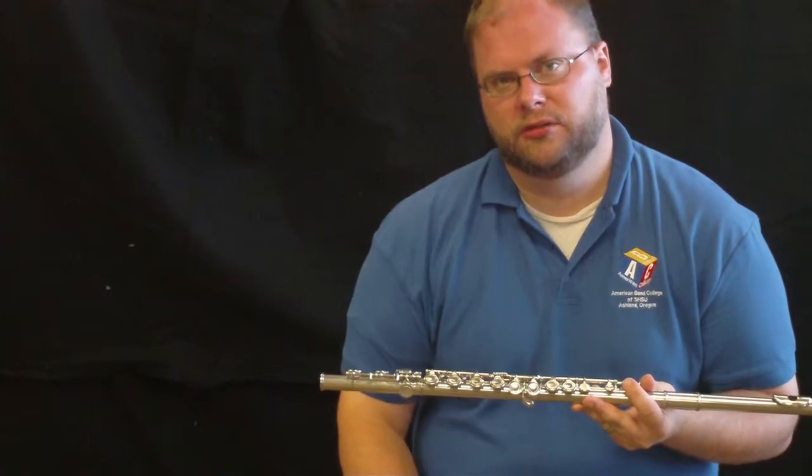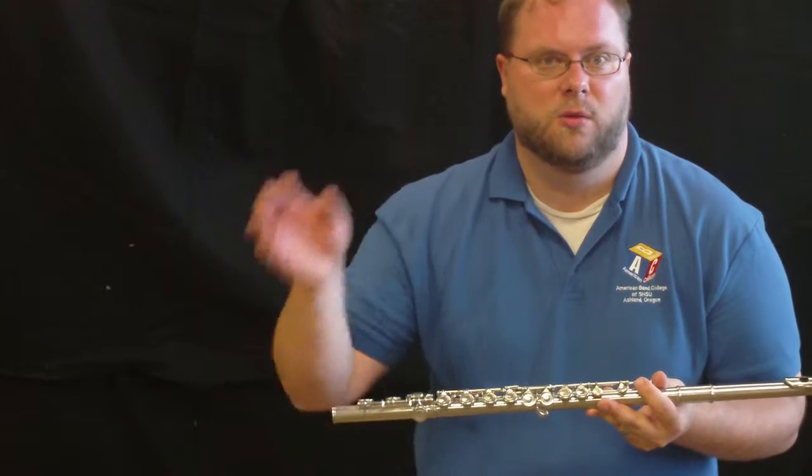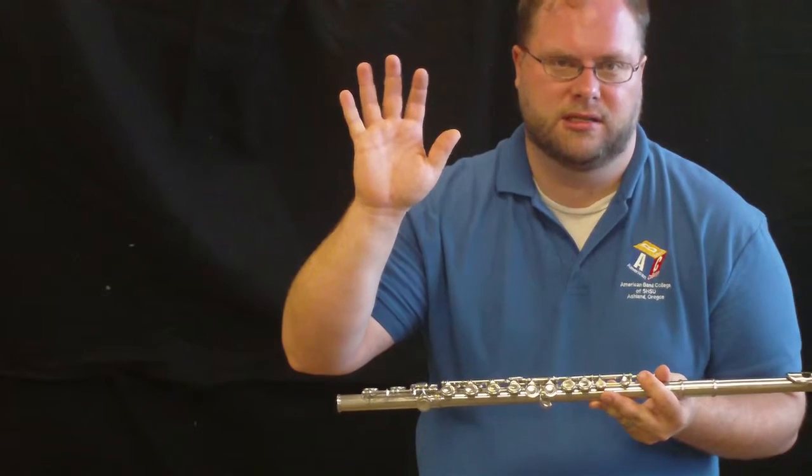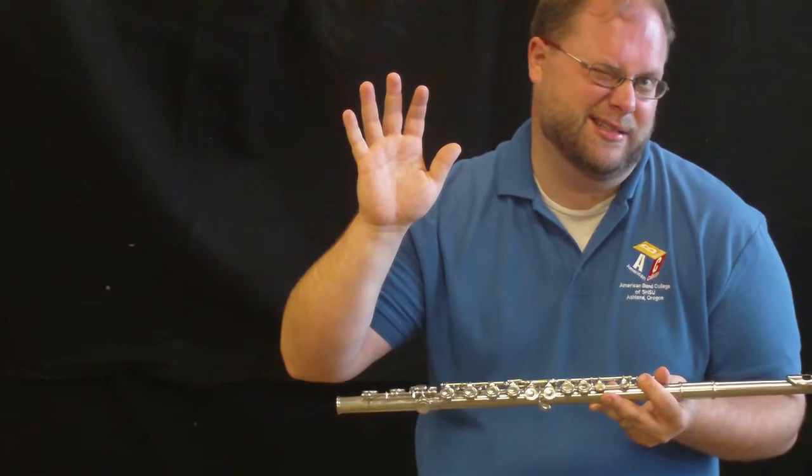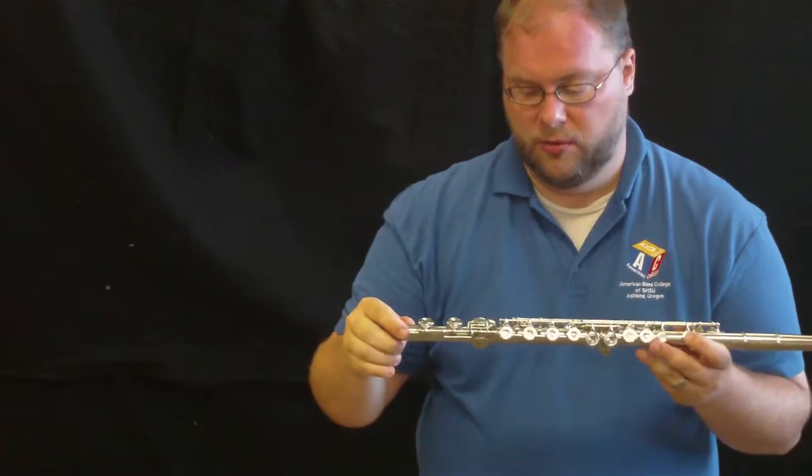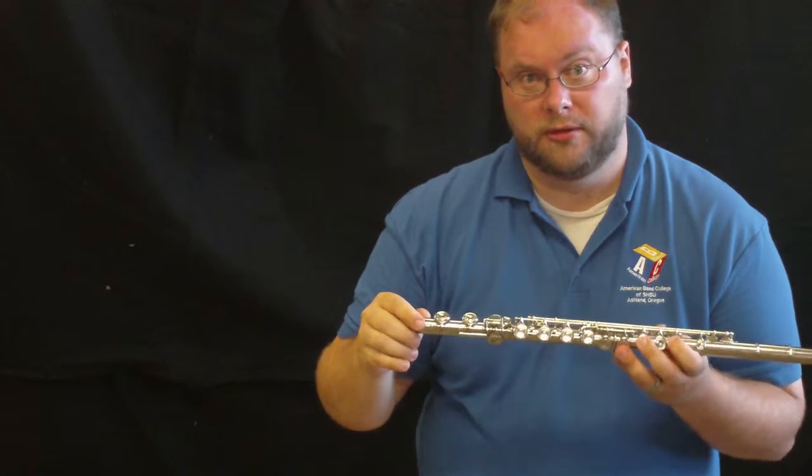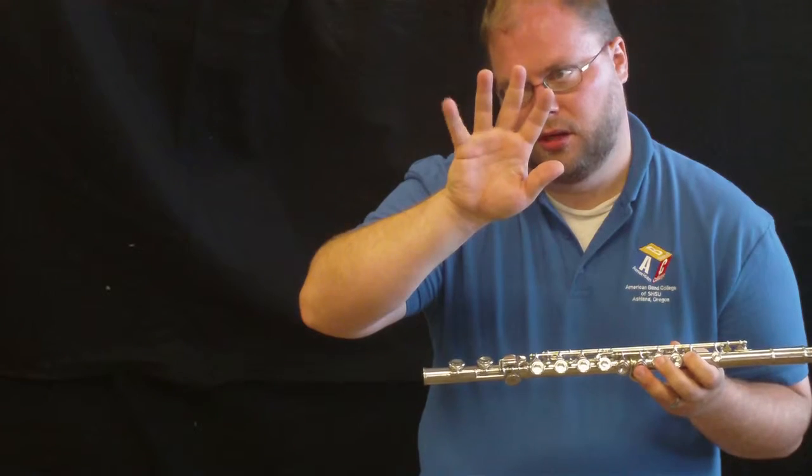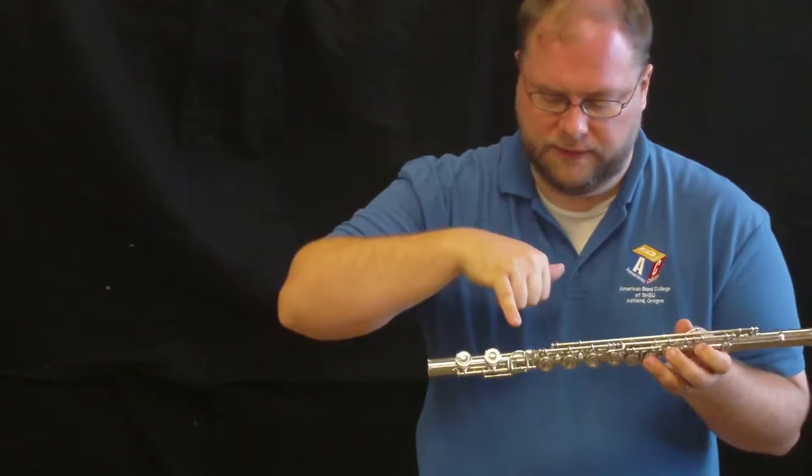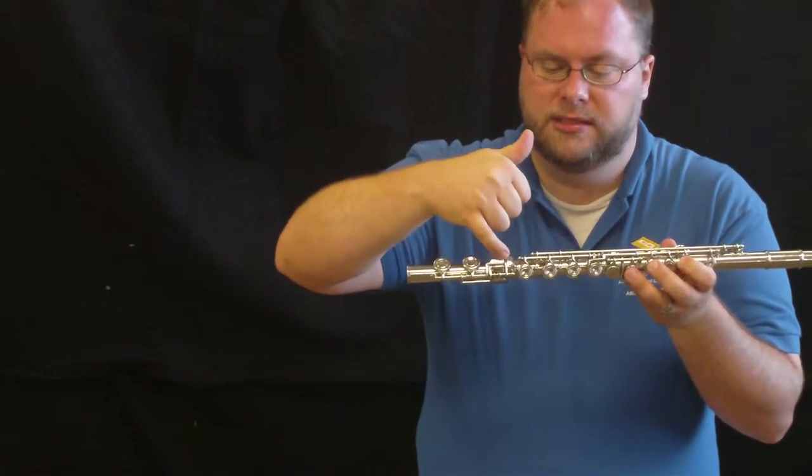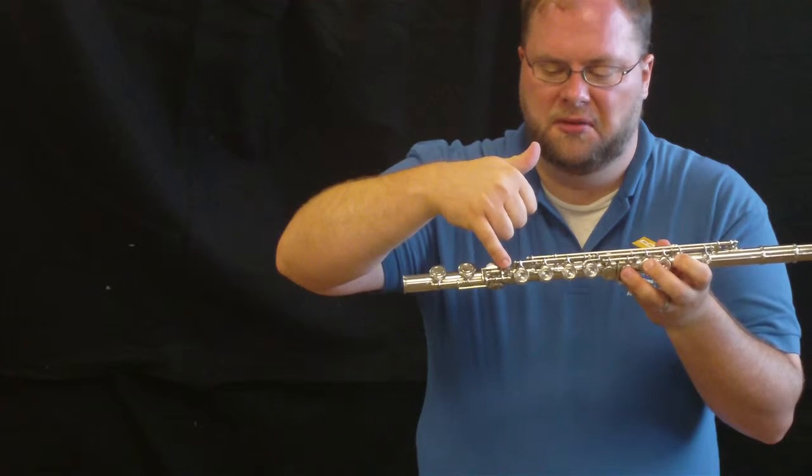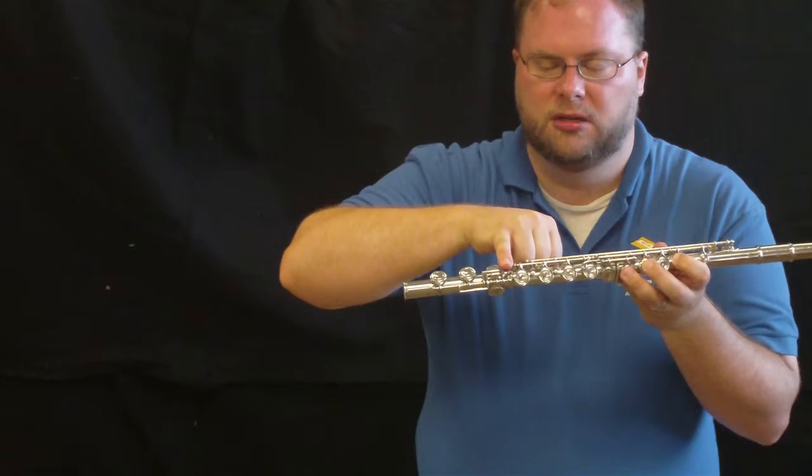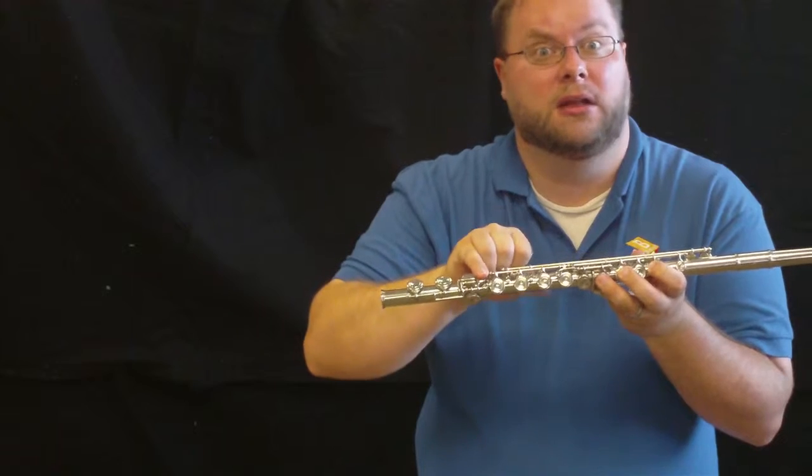So the first thing that we need to do is start with our right hand. We always like to start with our right hand on a flute. It makes it the easiest. So we're going to start with the foot joint down here. I want you to take your right hand and your pinky. When you look at the foot joint, there's all these keys down here. I want you to put it on the first one. Your pinky goes right there. That's one of your balance points on the flute.